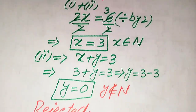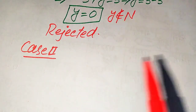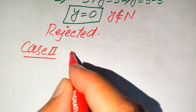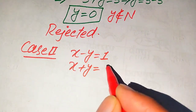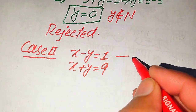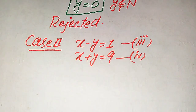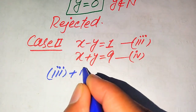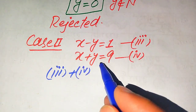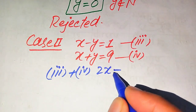We move to the second case, comparing the two factors with 1 and 9. We get x minus y = 1 as equation 3, and x plus y = 9 as equation 4. We now sum equation 3 and equation 4: x plus x gives 2x, and the negative y and positive y cancel out.